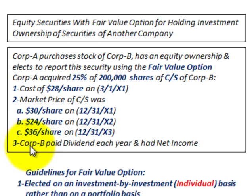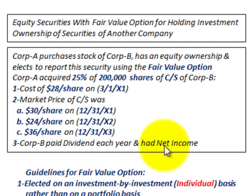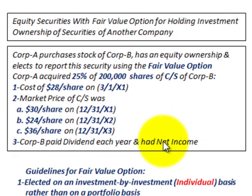Also for our example, Corporation B has paid some dividends each year and they also had net income — they could have had a net loss too, but we'll just look at it in terms of net income.